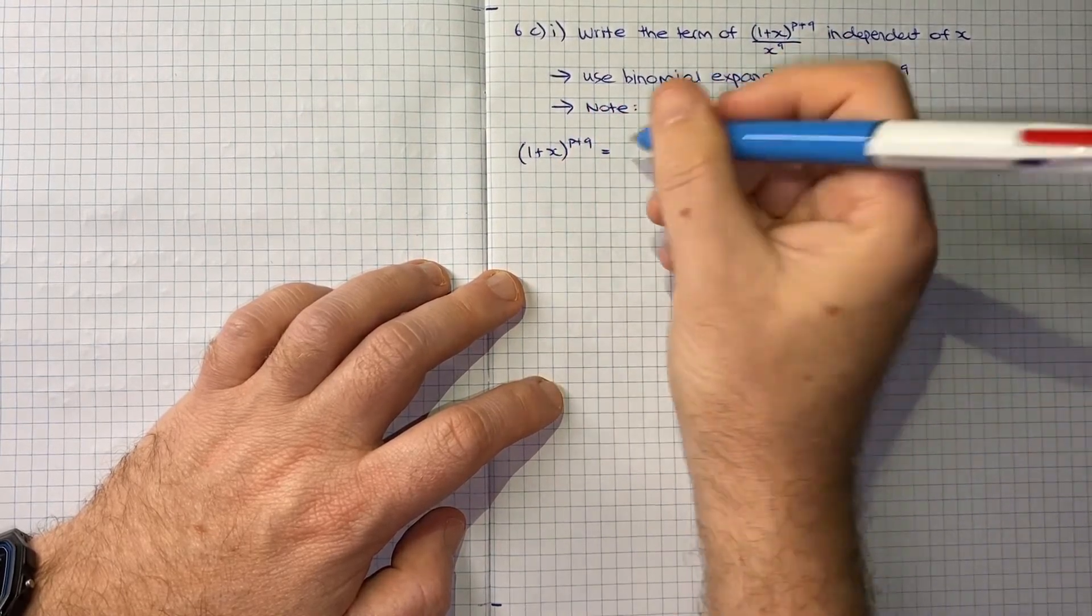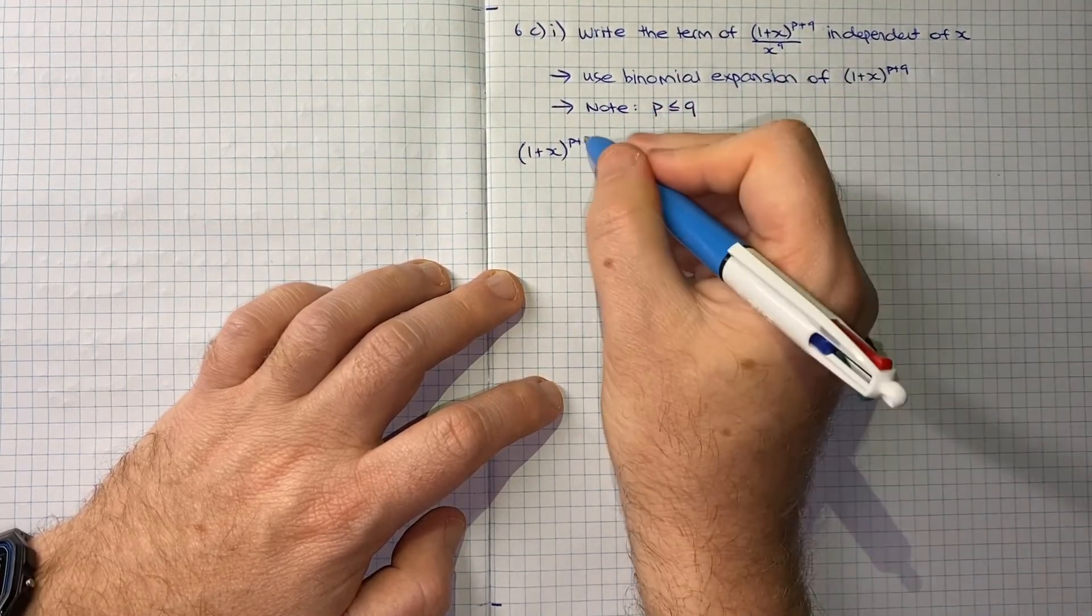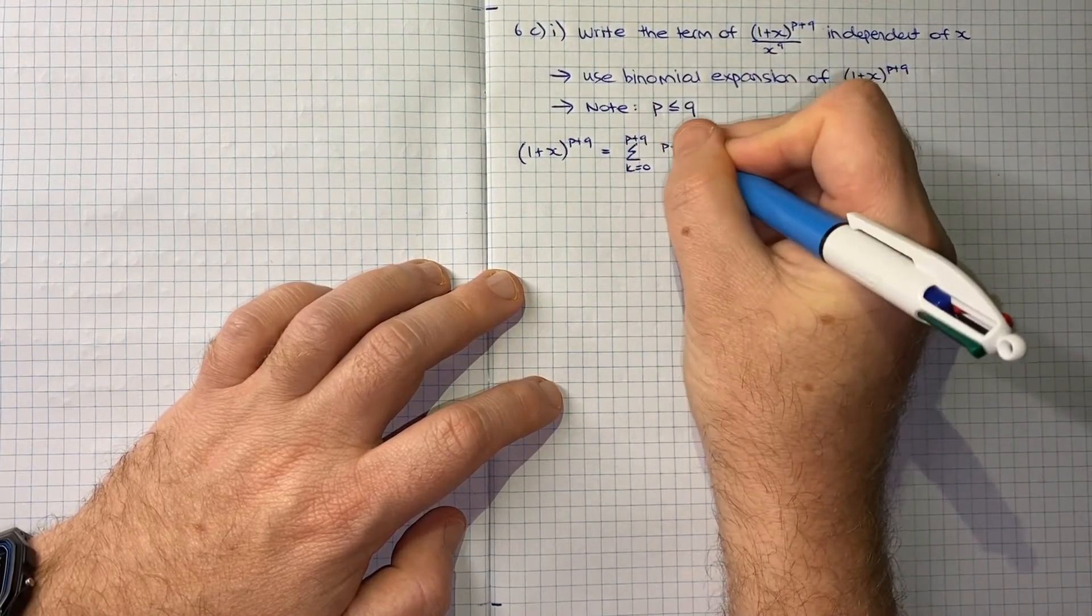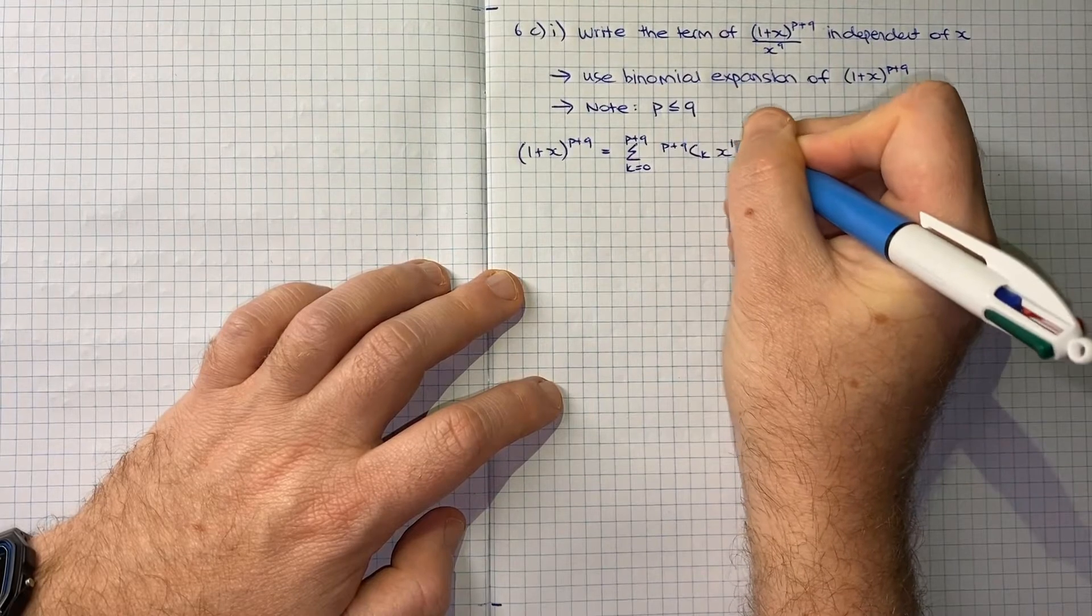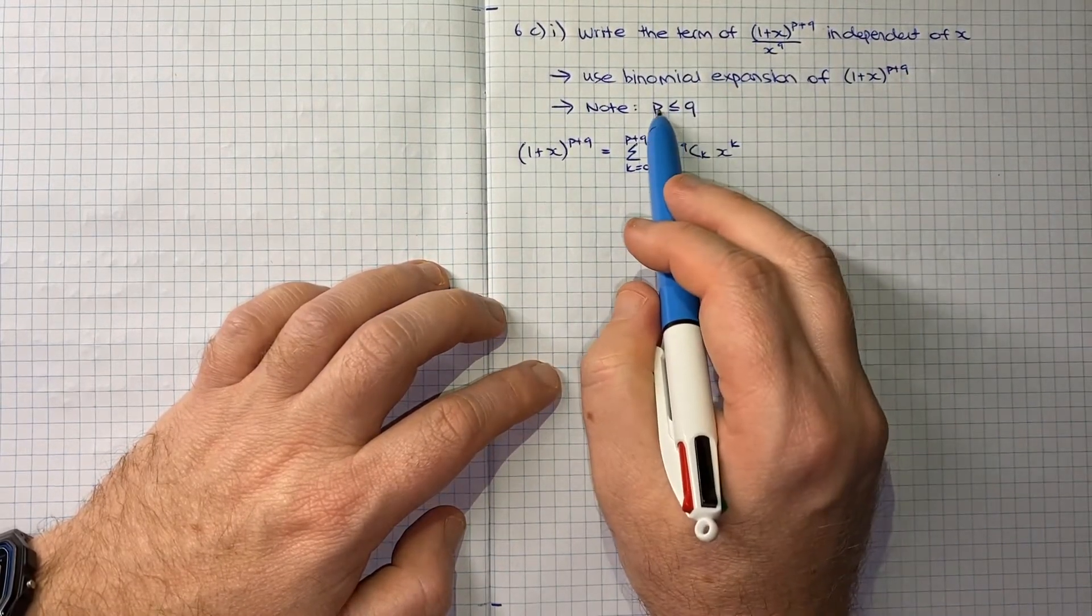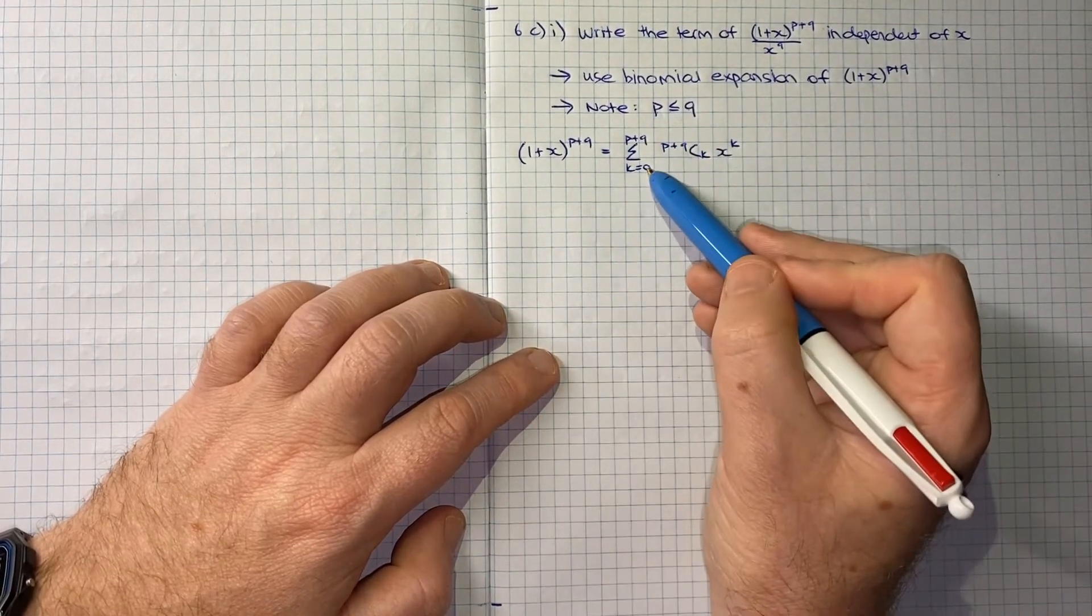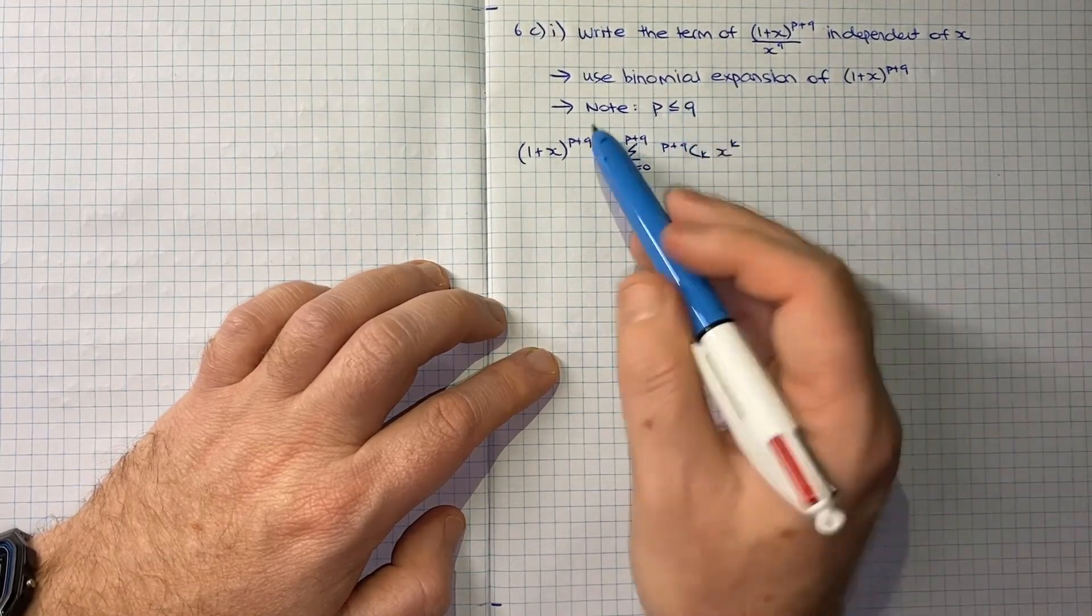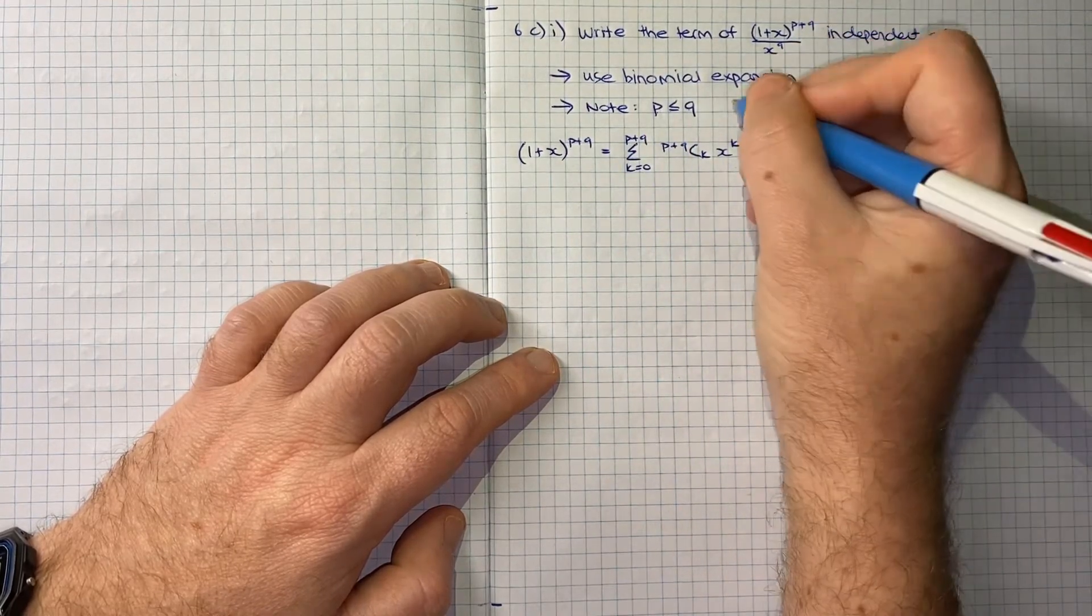In terms of the expansion, (1+x)^(p+q) will be written as the sum from k equals 0 up to p plus q of (p+q choose k) times x^k. That's the basic expansion.